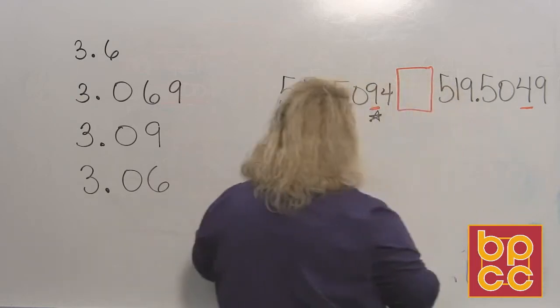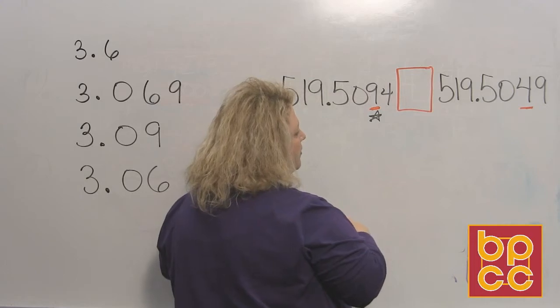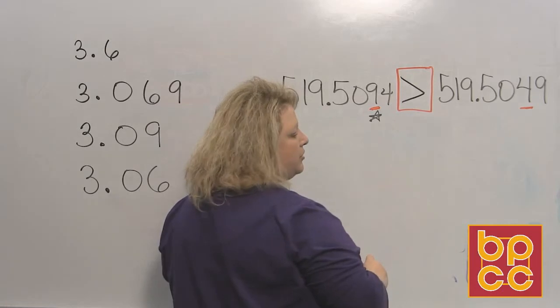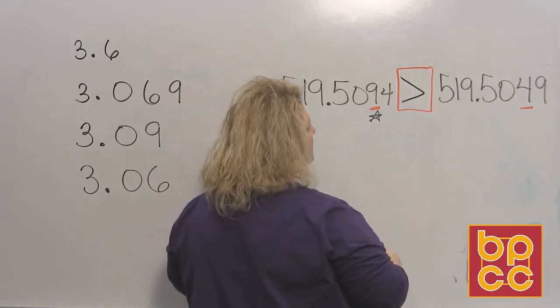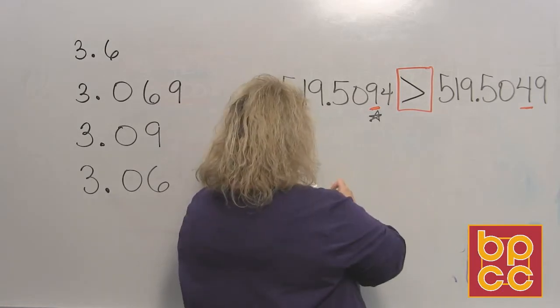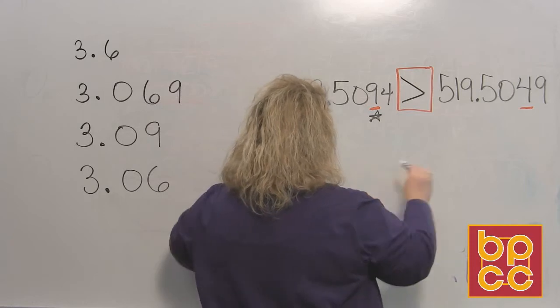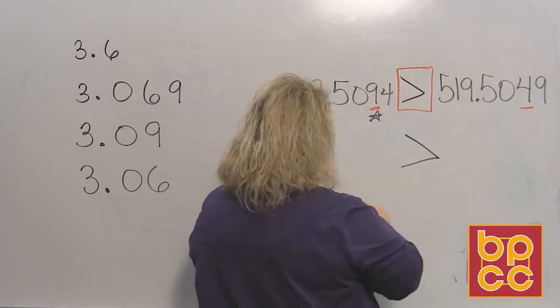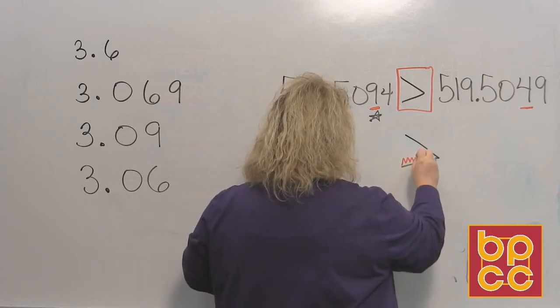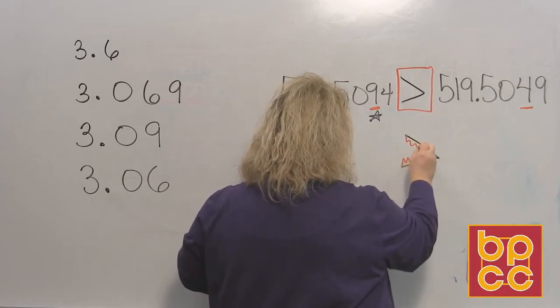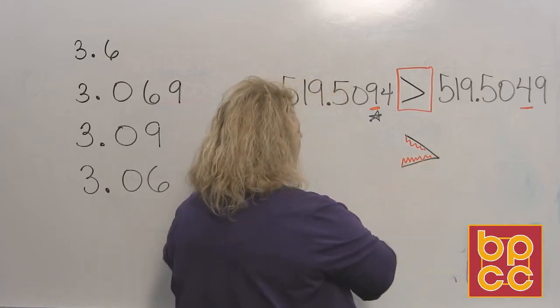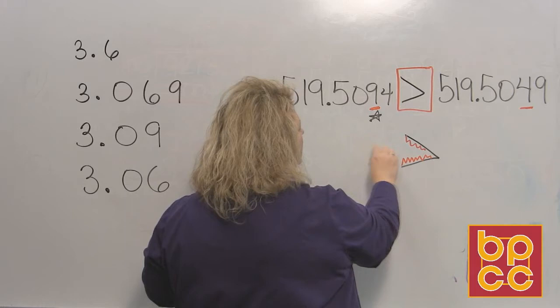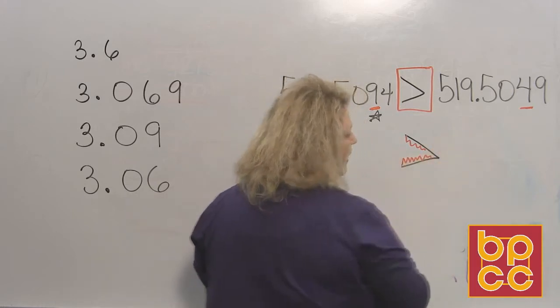You have to remember from previous modules, greater than points to the smaller number. Remember the little trick: if it's greater than, the alligator, you make your little alligator mouth. Greater than means that the alligator eats the bigger number. So the number on the left is bigger than the number on the right.